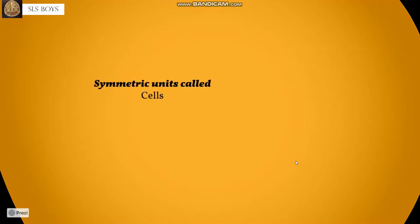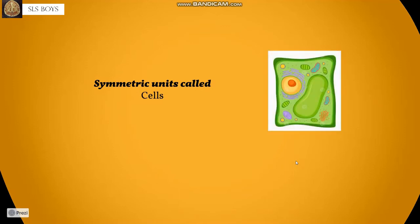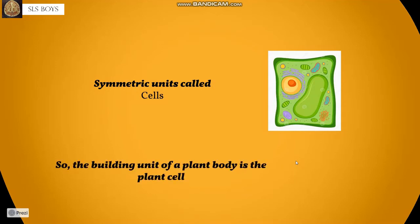The tissues consist of symmetric units called cells, and in the case of the plant we have the plant cell. So the building unit of a plant body is the plant cell. Let's now look at the structure of each of these cells.